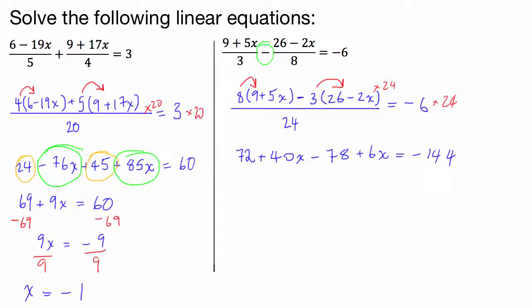Now, again, we're going to combine our like terms. So we have 72 and negative 78. And we also have positive 40x and positive 6x. Cool. So 40 and 6 is 46x. 72 minus 78 is negative 6. And that equals negative 144. Cool.